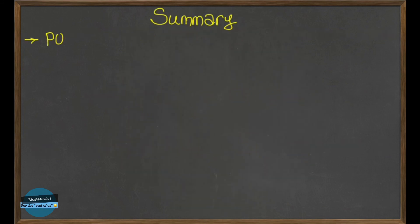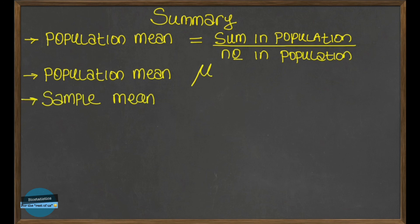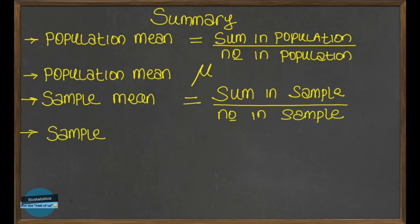In summary, the population mean is simply the sum of all the values for the individuals in the population divided by the number of individuals in that population. It is represented by mu. And because it's not always possible to determine the population mean, we use the sample mean. The sample mean is the sum of all the values of the individuals in a sample divided by the number of individuals in that sample. And it is represented by x bar.